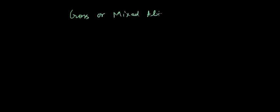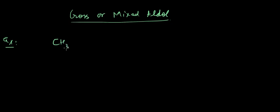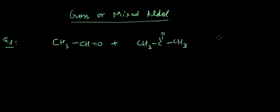Hi guys, in this lecture we'll be discussing cross or mixed aldol condensation. Let's get started with an example which will clearly illustrate this topic. We have an aldehyde and a ketone, and we are providing basic medium and heating it. So what are the compounds that should be formed?